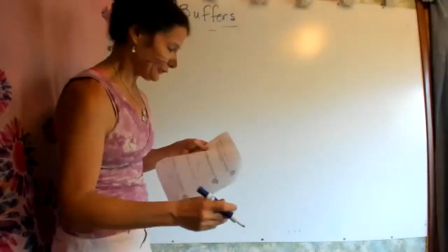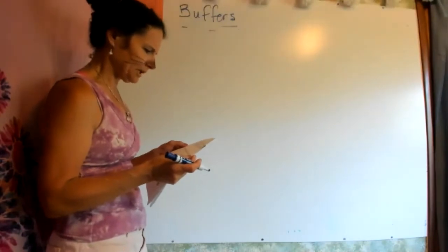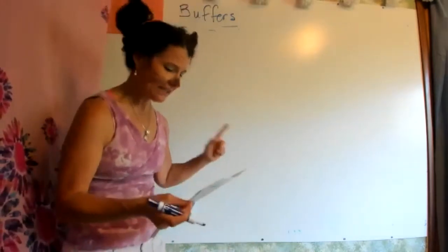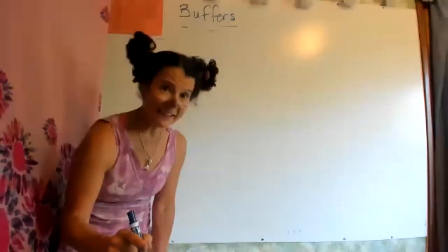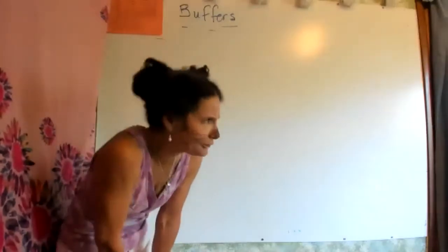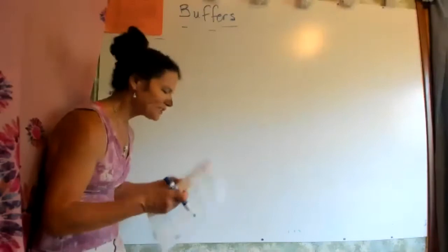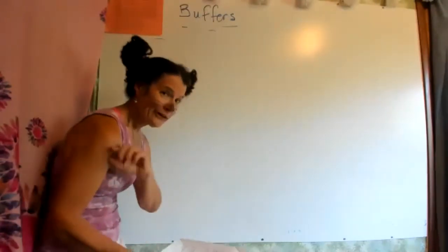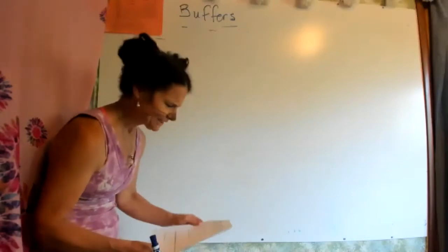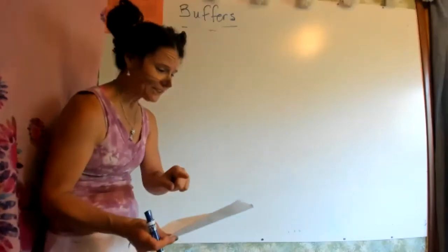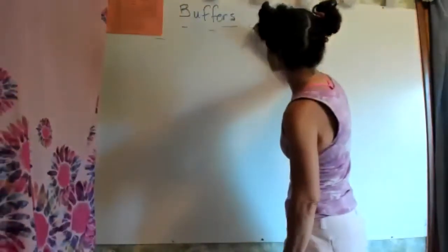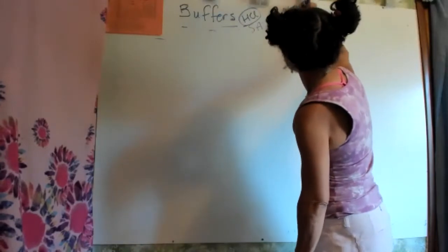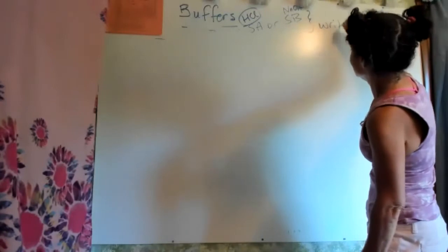Buffer capacity is how good the buffer is — how much acid or base can we add to it? We're now going to write an equation. The mantra for buffers and titrations: unless you see a strong acid or a strong base — HCl or NaOH — you do not need to write the reaction. But if you see a strong acid or strong base, then you need to write the reaction and we're going to do MICE charts.